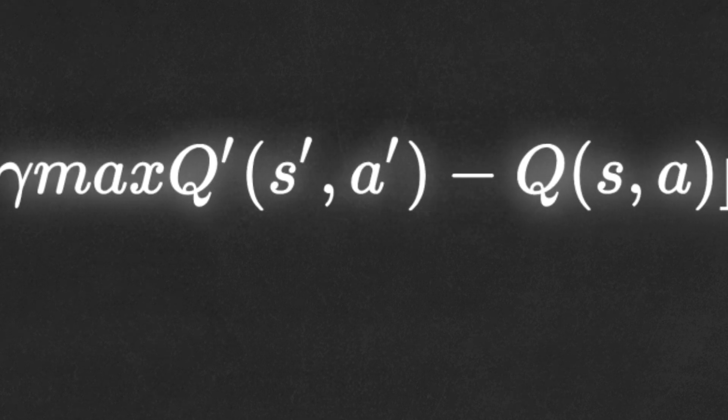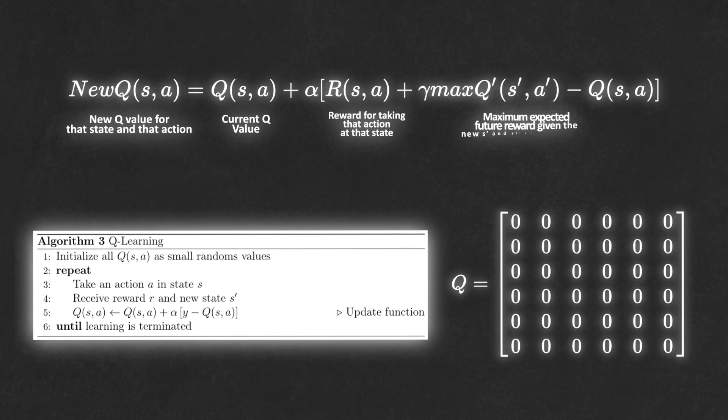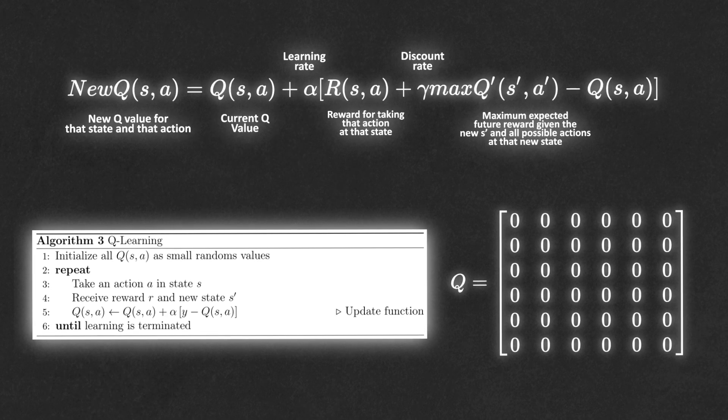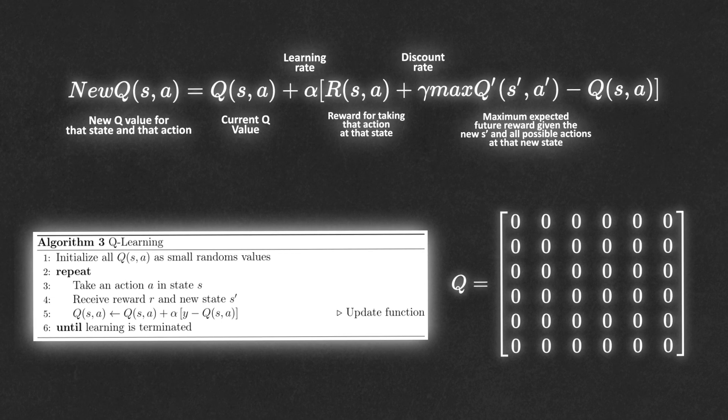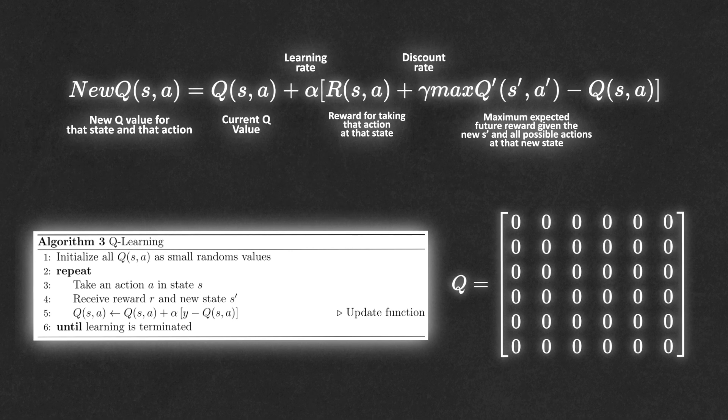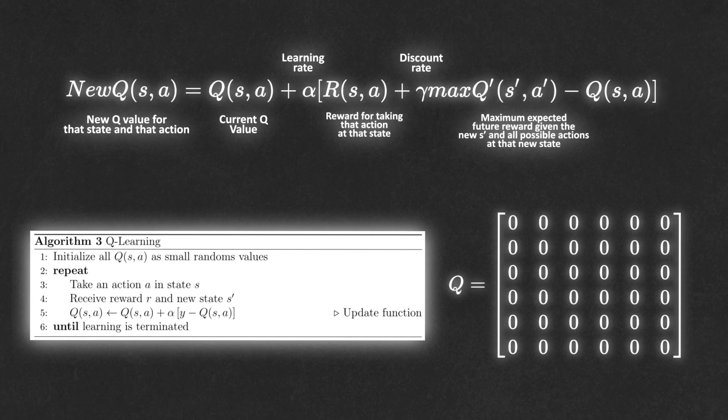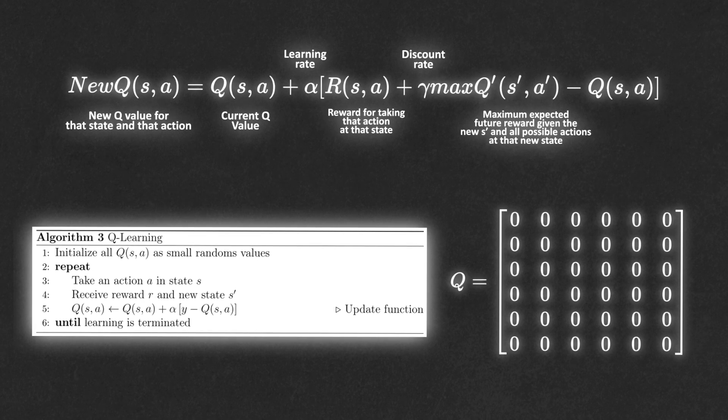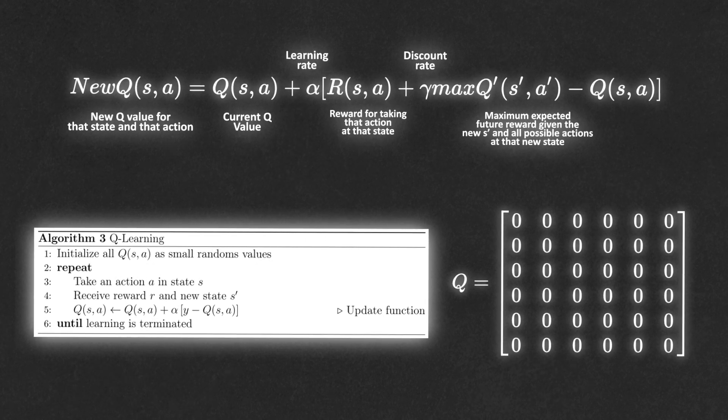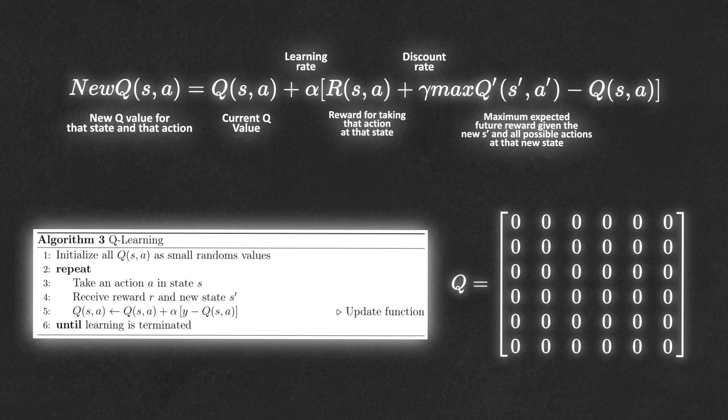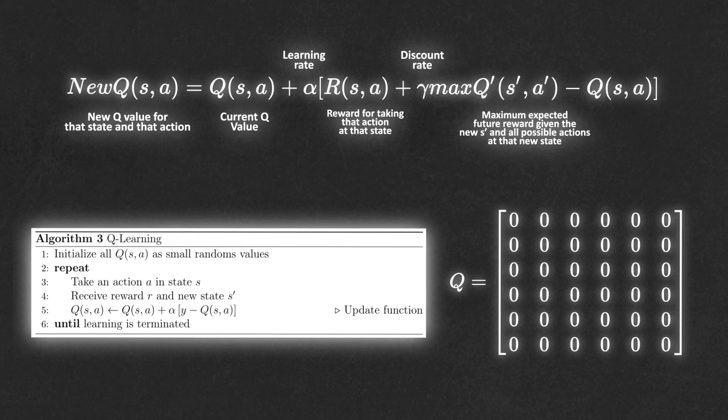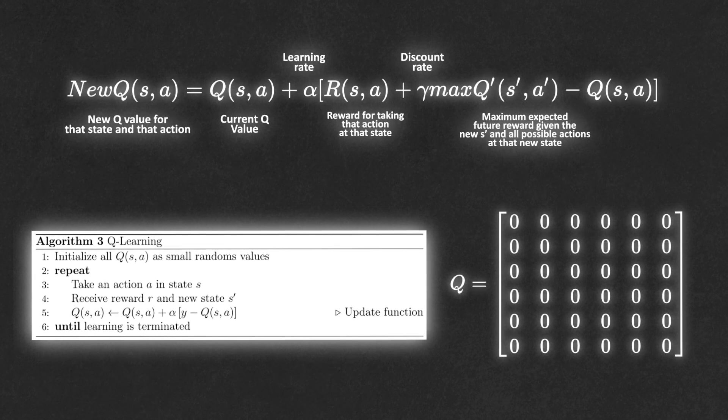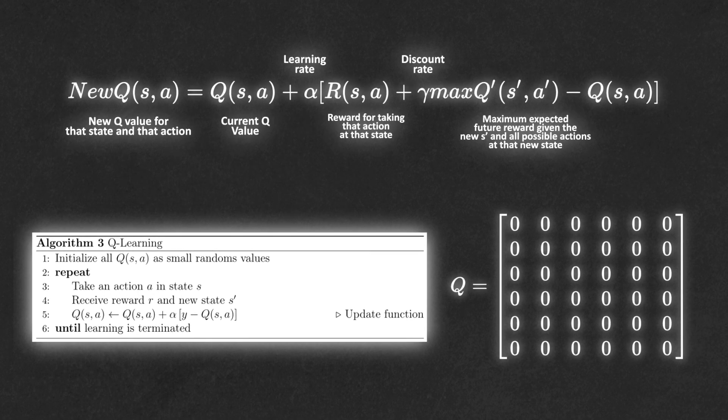We'll start by initializing the table to be all zeros. Then as we observe the rewards we obtain for various actions, we can update it accordingly. The way we make updates to the Q table is by using the Bellman equation. This states that the expected long-term reward for a given action is equal to the immediate reward from the current action combined with the expected reward from the best future action taken at the following state. So, we're reusing our own Q table when estimating how to update our table for future actions. More formally, the equation states that the Q value for a given state and action should represent the current reward plus the maximum discounted future reward expected according to our own table for the next state we could end up in. So, given a state, the decision policy will calculate the next action to take and improve the Q function from the new experience of taking an action.